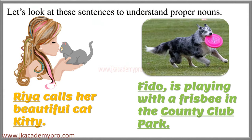Let's look at those examples once again. 'Rhea calls her beautiful cat Kitty.' Here, Rhea and Kitty are special names — Rhea is a special name given to a girl, and Kitty is a special name given to her cat. So Rhea and Kitty are proper nouns, and both begin with a capital letter. Second example: 'Fido is playing with a frisbee in the County Club Park.' Fido is a special name given to the dog, and County Club Park is a special name given to a park. Both are proper nouns and begin with a capital letter.